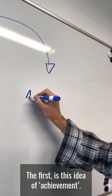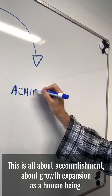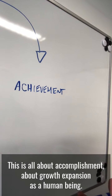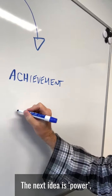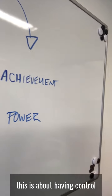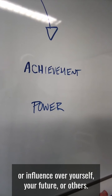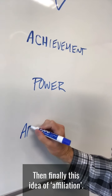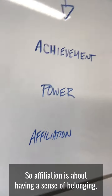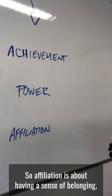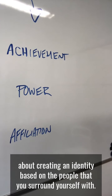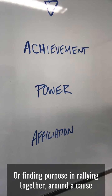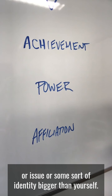The first driver is achievement — this is all about accomplishment, growth, and expansion as a human being. The next is power — this is about having control or influence over yourself, your future, or others. And finally, affiliation — this is about having a sense of belonging, creating identity based on the people you surround yourself with, or finding purpose and rallying together around a cause or issue or some sort of identity bigger than yourself.